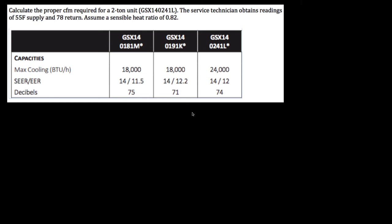Hello, this is Rumberto and this is the HVAC EasyMath channel. Today we're going to be talking about how to calculate the proper CFM for a two-ton unit and for a sensible heat ratio of 0.82. We have the model number and the total cooling capacity. Let's start with the equation.